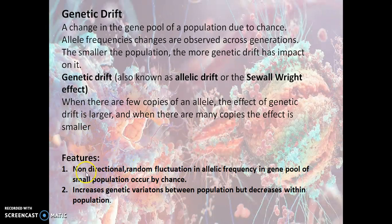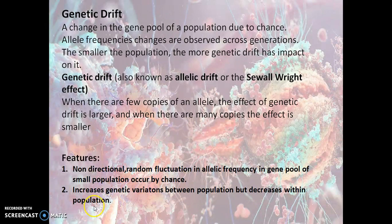There are some features of genetic drift. It is non-directional — there is no predicted direction. Random fluctuations in allelic frequency in the gene pool of a small population occur by chance. It increases genetic variation between populations, but it decreases variation within a population. These are the key points: it is non-directional, always random, and it increases variation between populations while decreasing it within populations.